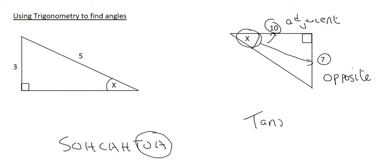So you say tan of x equals, now the opposite must come first and then the adjacent, so like that. Then you just say shift tan of 7 over 10 and that'll round up perfectly to 35 degrees, and so that means that that angle there is 35 degrees.